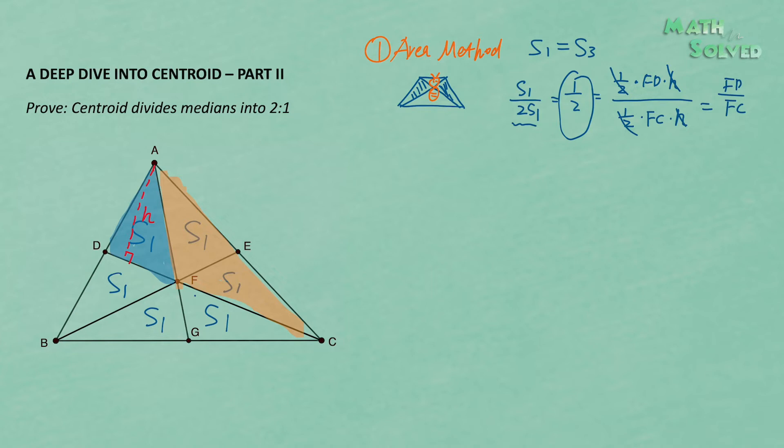Some students are wondering: this only proves the ratio for one median — what about the other two? We can use the same area method to show the proof for the other medians, but we need to consider different pairs of triangles for each one.